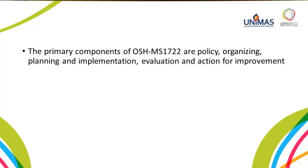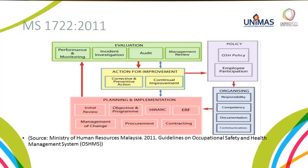The primary components of OSH MS 1722 are policy, organising, planning and implementation, evaluation, and action for improvement. For the Occupational Safety and Health Management System, there are five components for the MS 1722-2011.